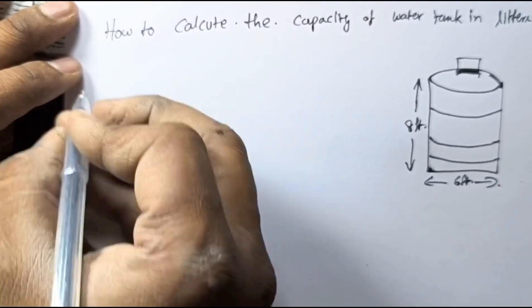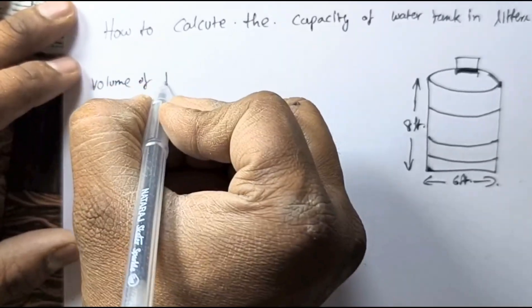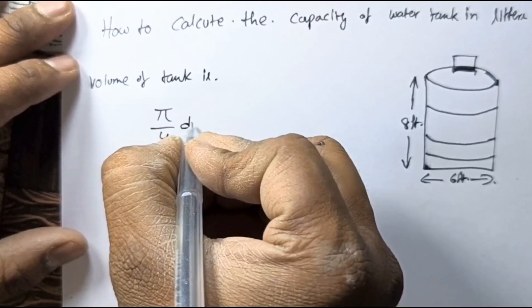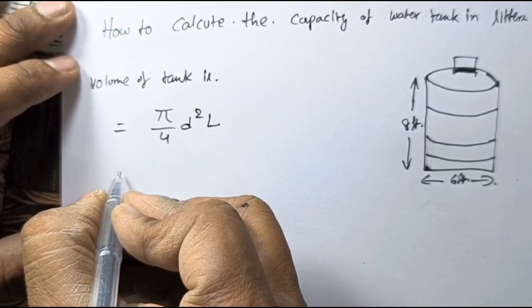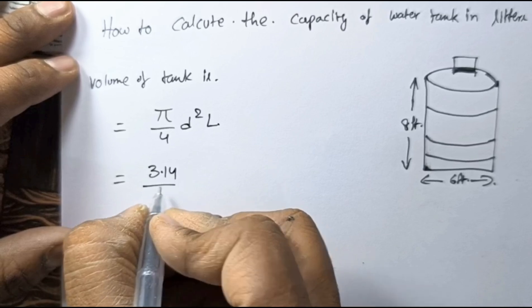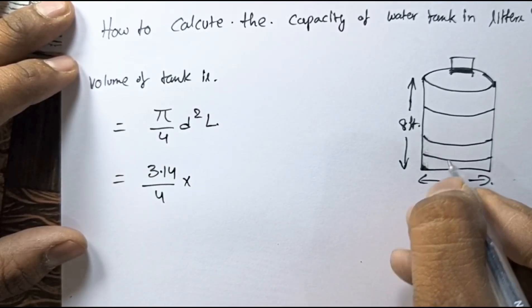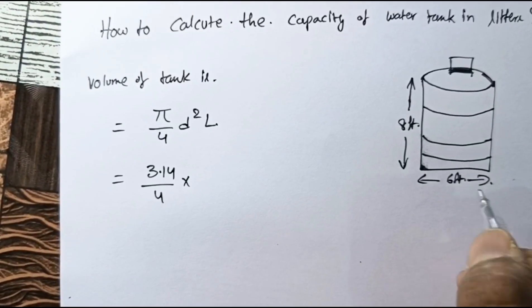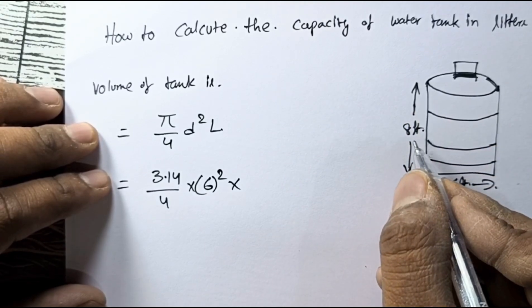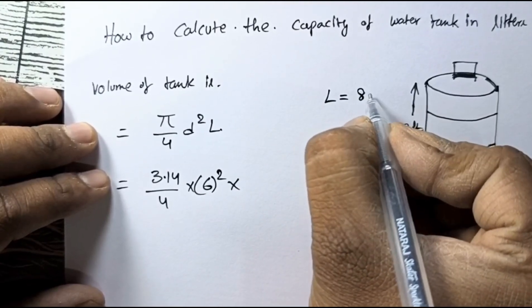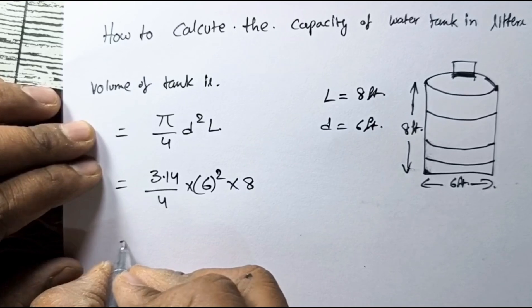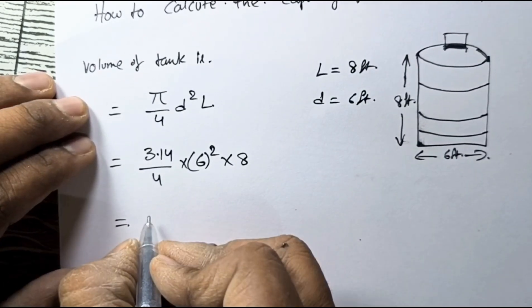Now the formula for volume of a tank is: Volume = (pi / 4) × D² × L. When we substitute the values, pi is 3.14, divided by 4, into diameter — the diameter of the tank is 6 feet — 6 squared, into length 8 feet.